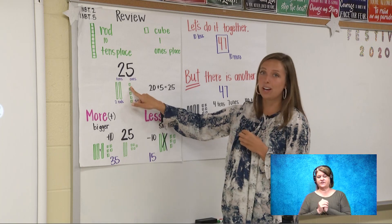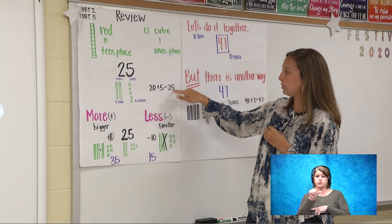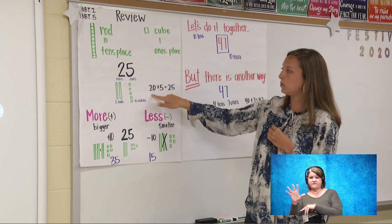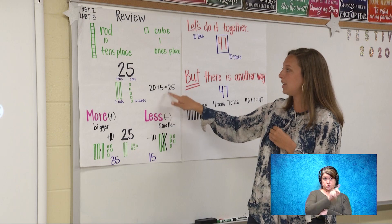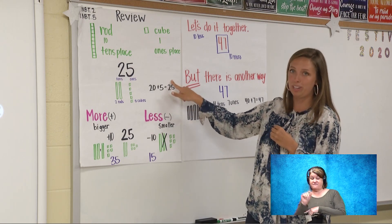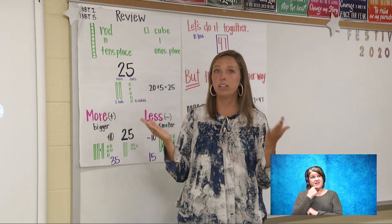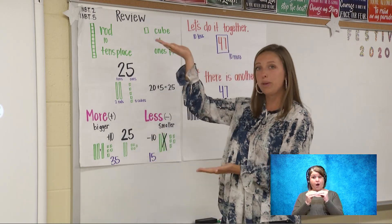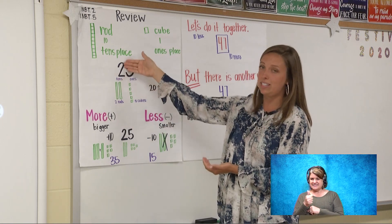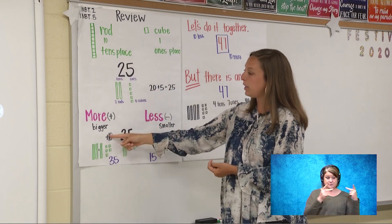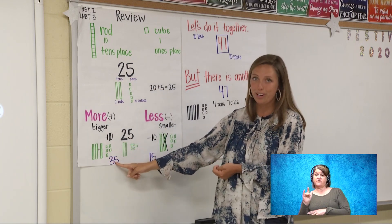25 is also represented as 20 plus 5 equals 25. So two rods plus five ones gives you the number 25. If I said I wanted 10 more — to have more, you're getting bigger. But we're only saying 10 more, so it changes the tens place. 10 more than 25, you add a 10 and it becomes 35.